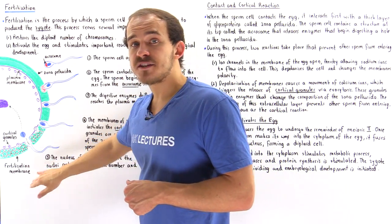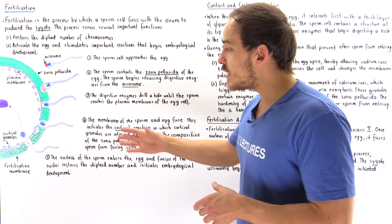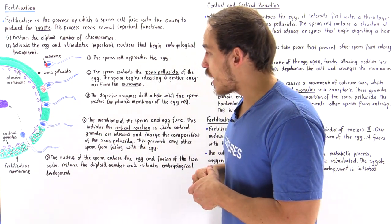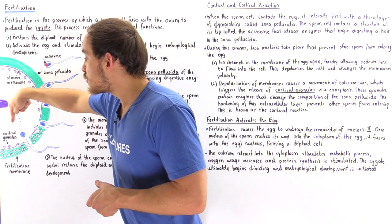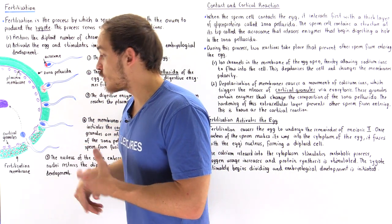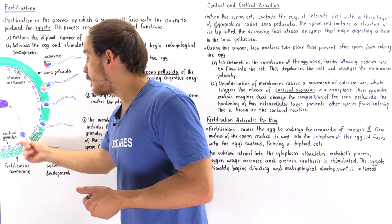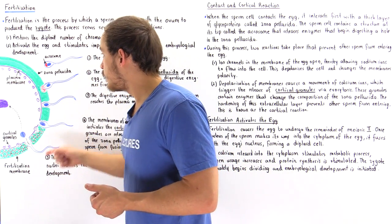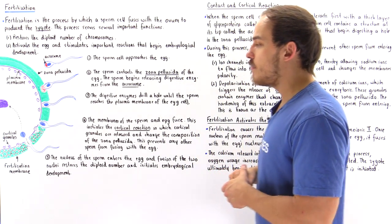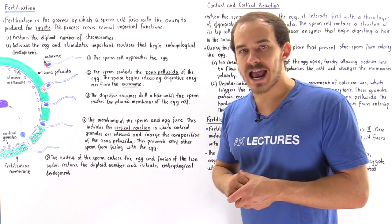This prevents polyspermy from taking place. This reaction — in which cortical granules fuse with the membrane, releasing enzymes that change the composition of the zona pellucida and form the fertilization membrane — is known as the cortical reaction.